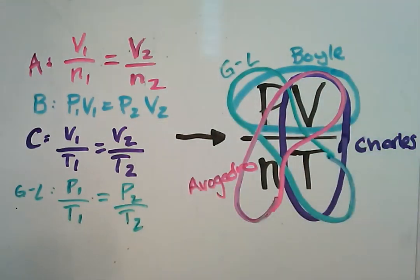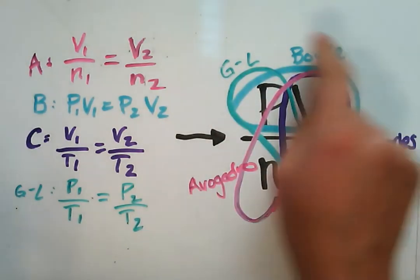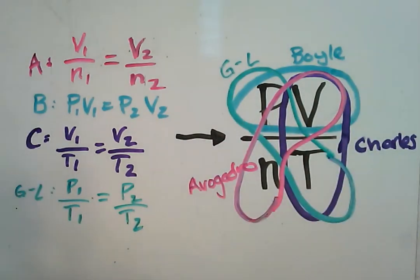Okay, so that should help you memorize the gas laws instead of having to remember that Boyle's law relates pressure and volume with constant temperature. We can just circle this law and know that P and V are in Boyle's law.